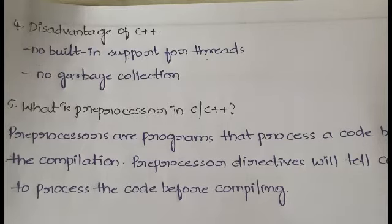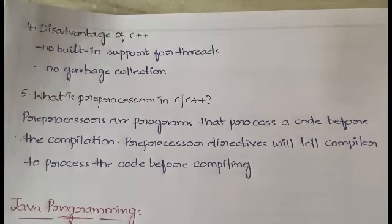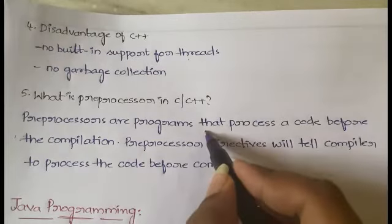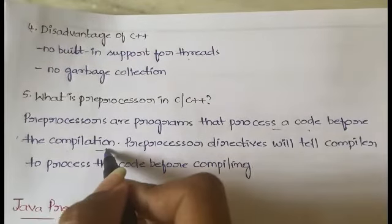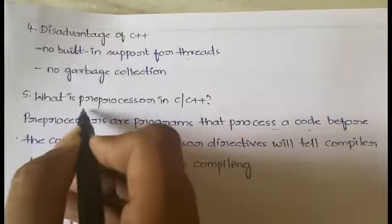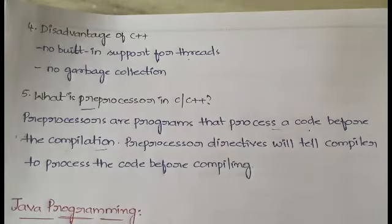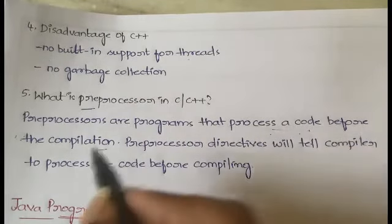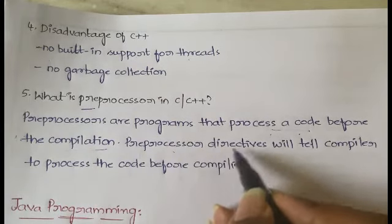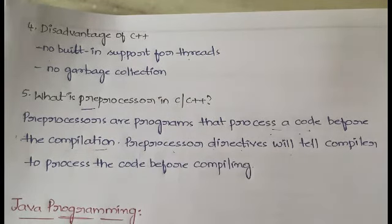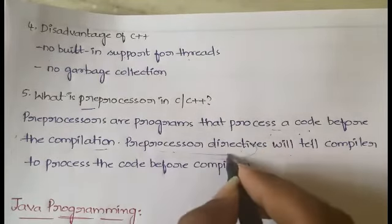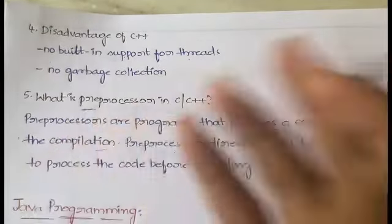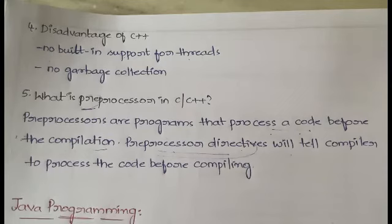The last question is: what is a preprocessor in C++? Preprocessors are programs that process code before compilation. 'Pre' means before — so the code is processed before the compilation step. Preprocessor directives are used to tell the compiler to process the code before compiling. A simple way to remember: pre means before, so the code is processed before compilation itself.